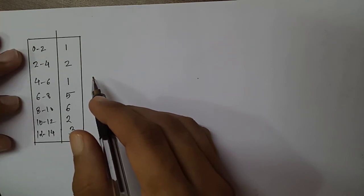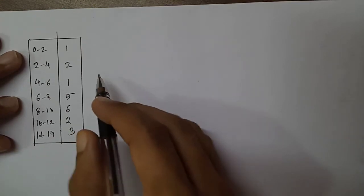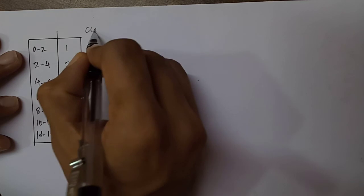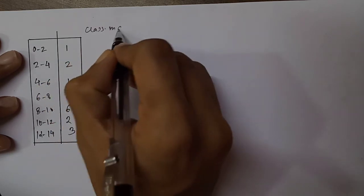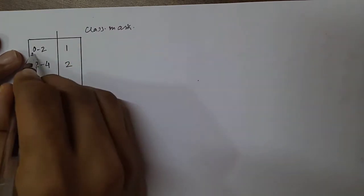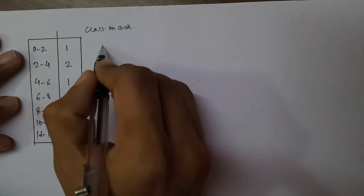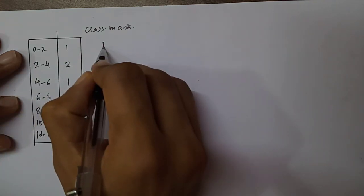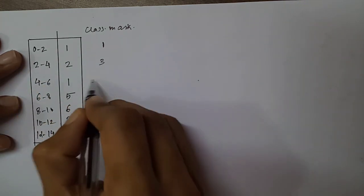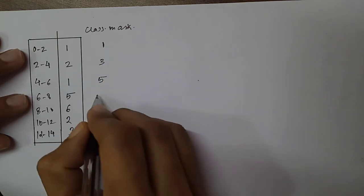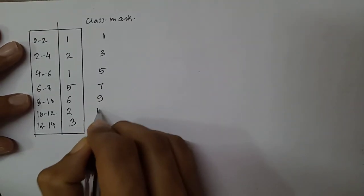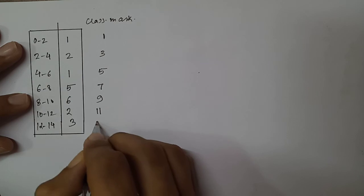In this type of data, we first need to find the class marks. The class mark is the average of each interval. So for the first interval, the class mark is 1; for the next it is 3, then 5, then 7, then 9, then 11 and 13.